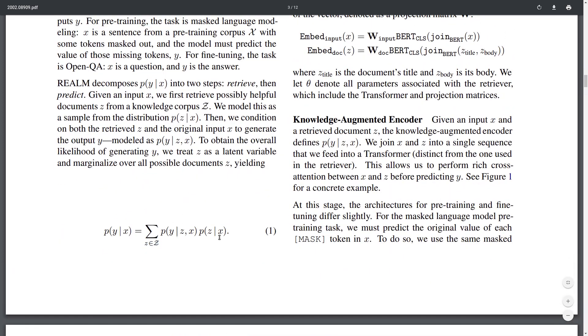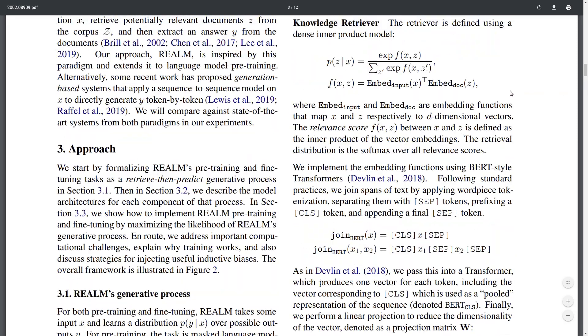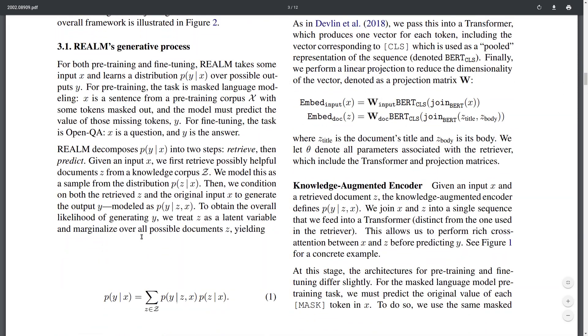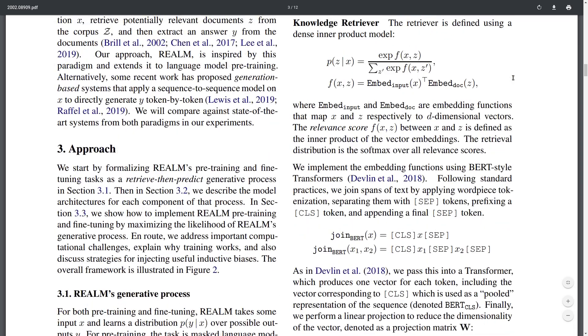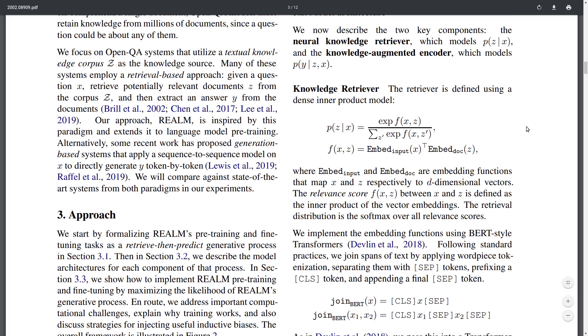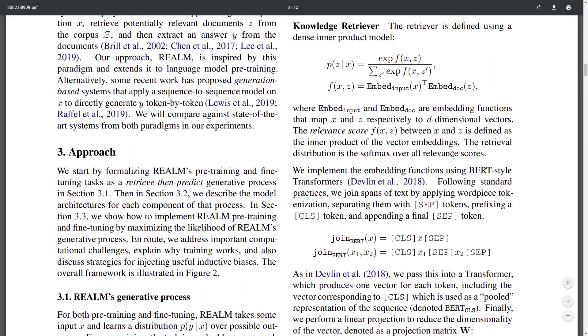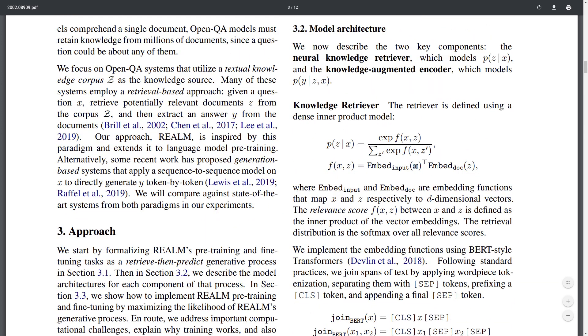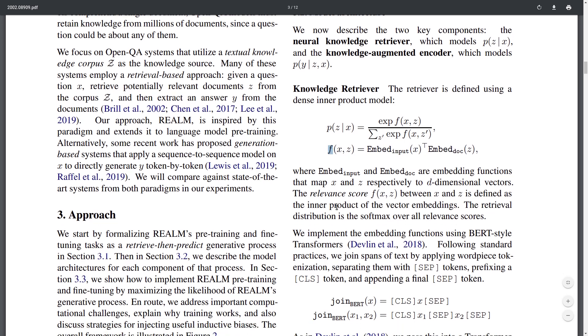To implement the two models, you're going to be using, for both of them, transformer-type models. First of all, the retrieval model—you're going to be having some embeddings computed over the input text that you want to find the related documents for. And then also you're going to have an embedding for each document z, and you're going to be computing the inner product between the two embeddings, which is going to give you some score f of the relevance of document z given input text x.